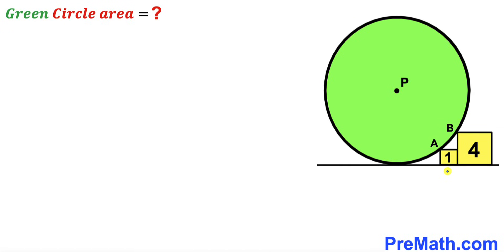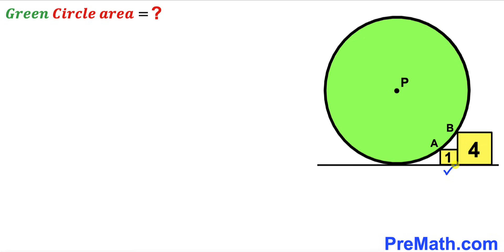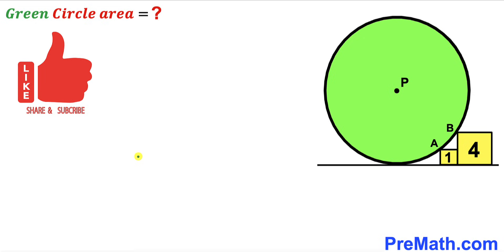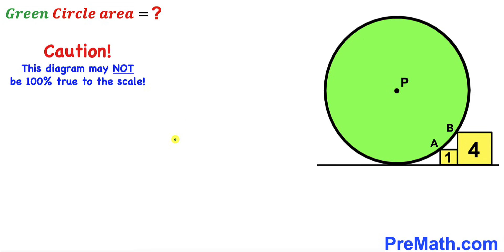Welcome to PreMath. In this video we have two yellow shaded squares and a green shaded circle with center P, arranged as shown in the diagram, such that the area of the larger square is 4 square units and the area of the smaller square is 1 square unit. Our task is to calculate the area of the green shaded circle. Please don't forget to give a thumbs up and subscribe, and keep in mind that this figure may not be 100% true to scale.